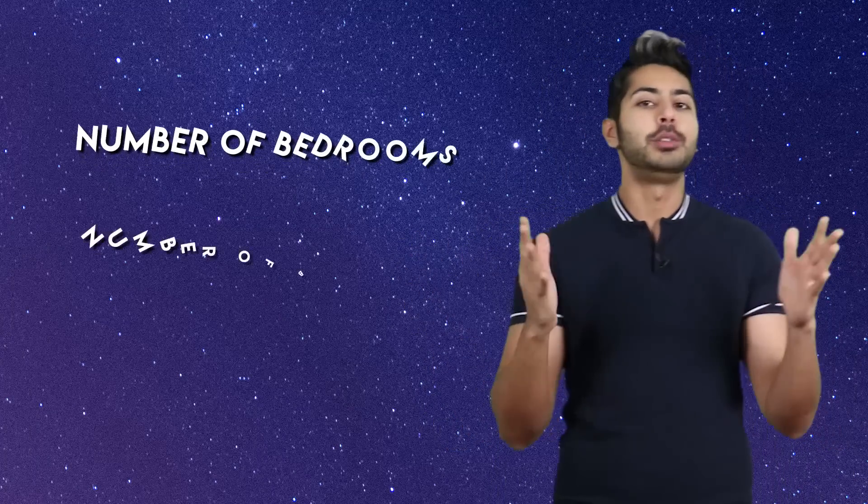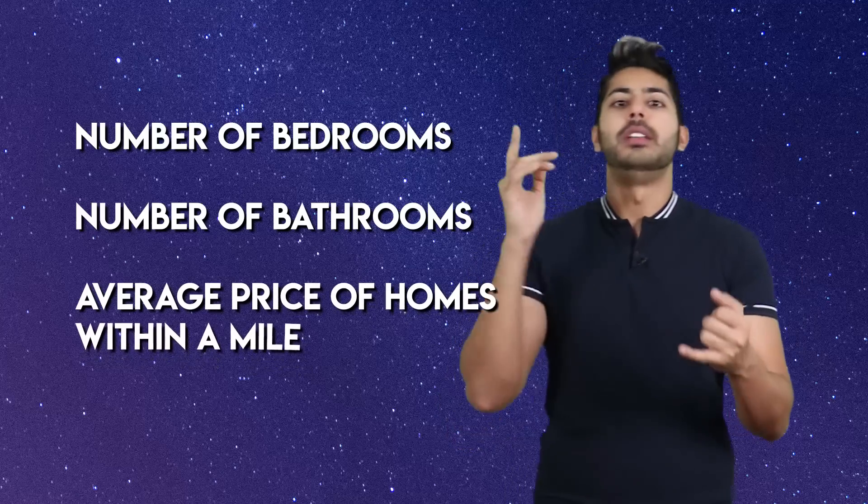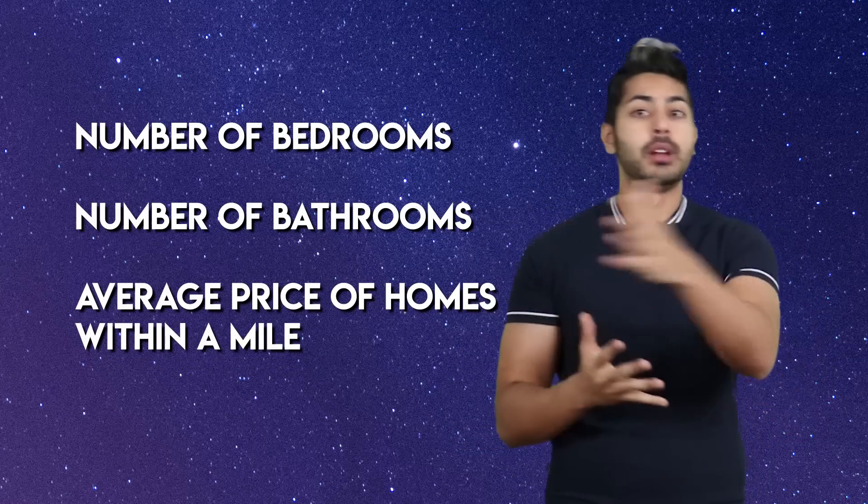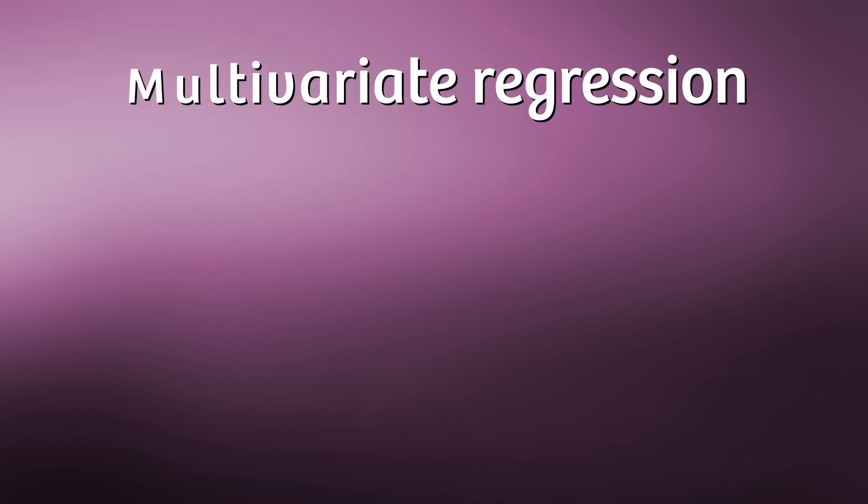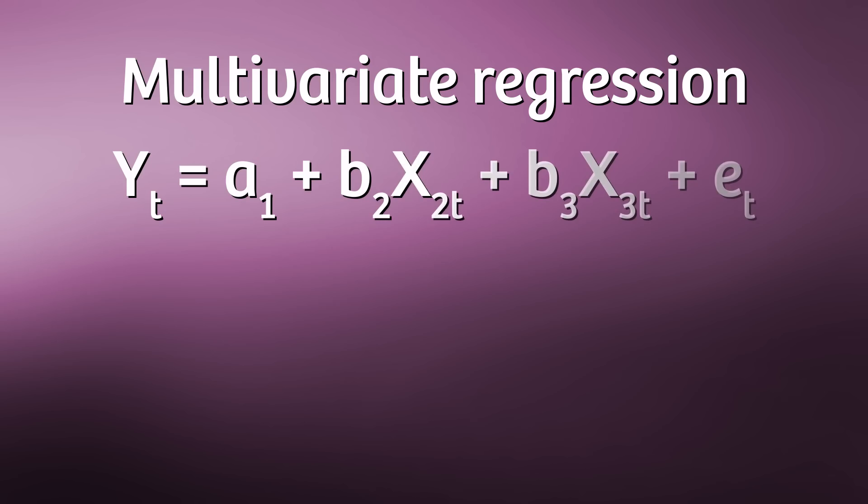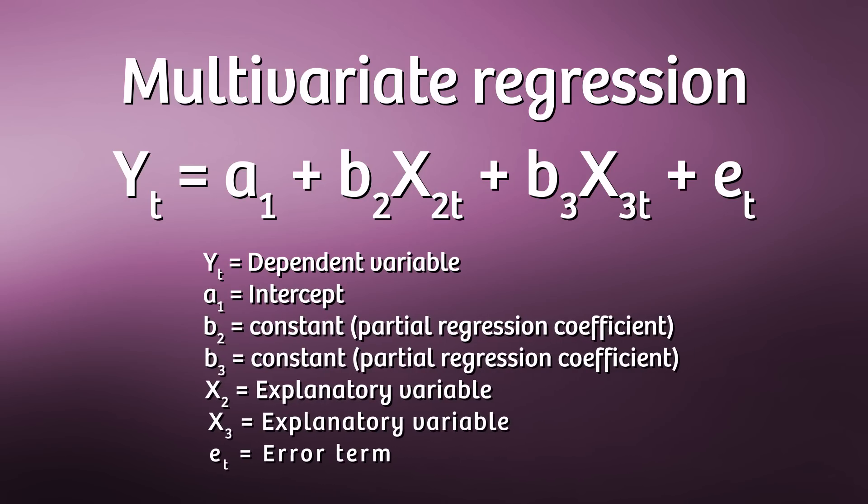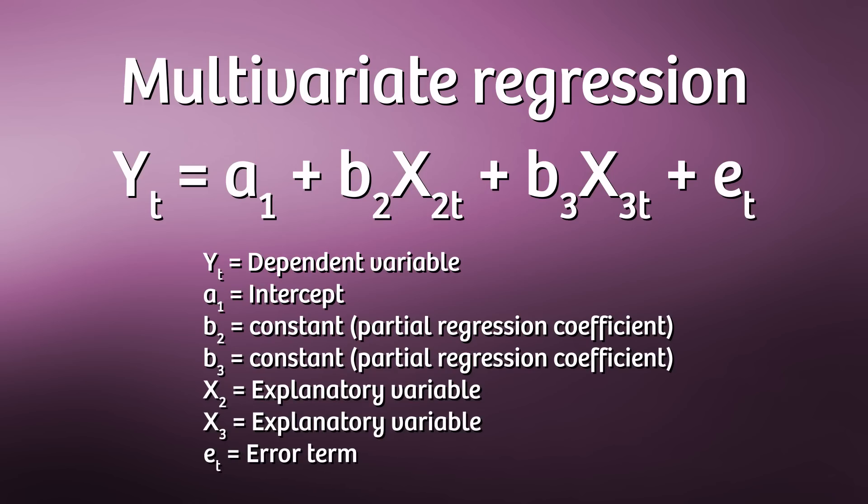But apartment prices don't just depend on the price per square foot, right? Also included are different features like the number of bedrooms and the number of bathrooms, as well as the average price of homes within a mile. If we factored in those features as well, our regression line would look more like this. There are now multiple variables to consider, so we can call it a multivariate regression problem. The branch of math concerned with the study of multivariate spaces and the linear transformations between them is called linear algebra.